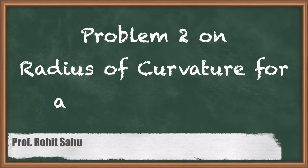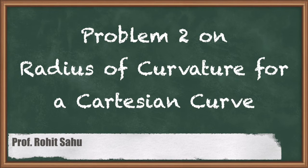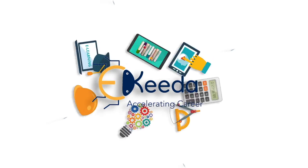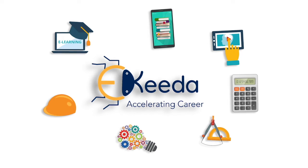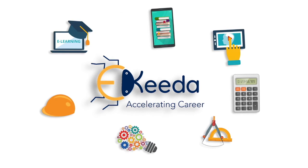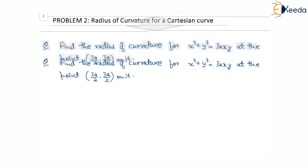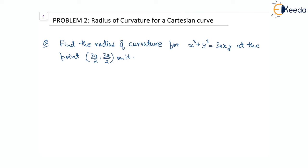Hello. In this session we will see a problem on radius of curvature for a Cartesian curve. The question requires us to find the radius of curvature for the equation x³ + y³ = 3xy at the point (3a/2, 3a/2).